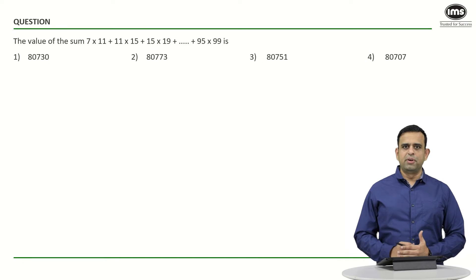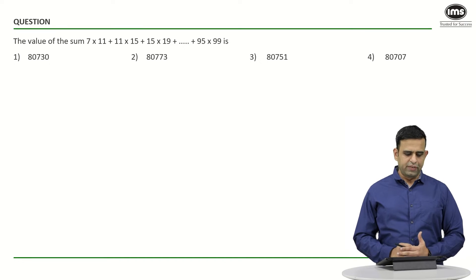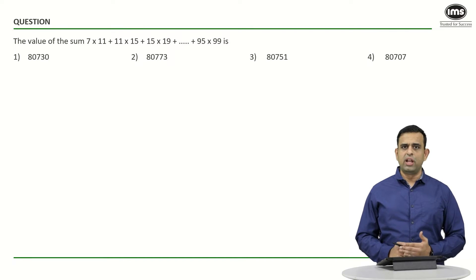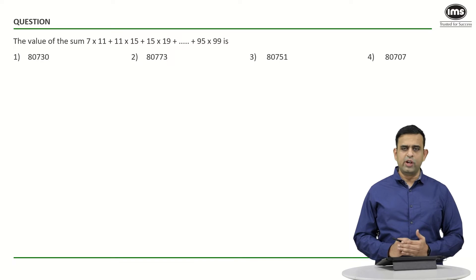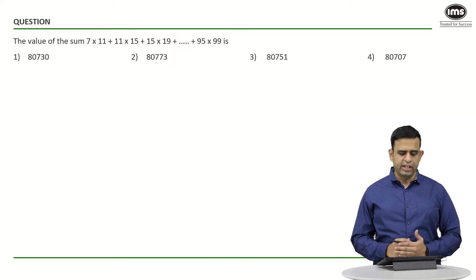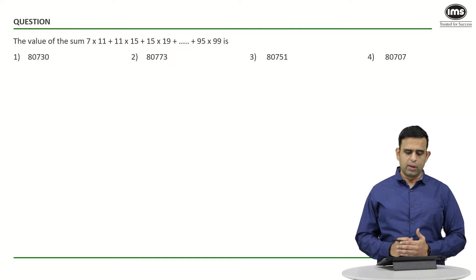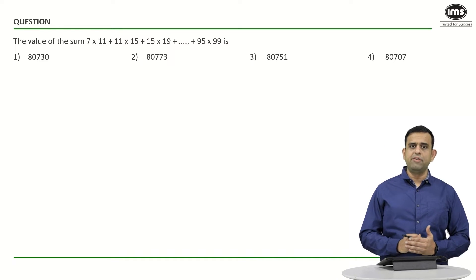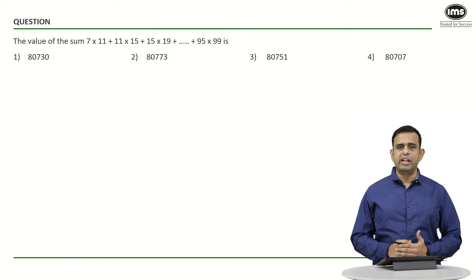In this particular sum, we need to find the value of the sum: 7×11 + 11×15 + 15×19 and so on, up to 95×99.